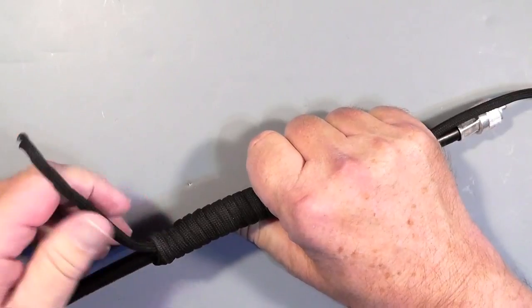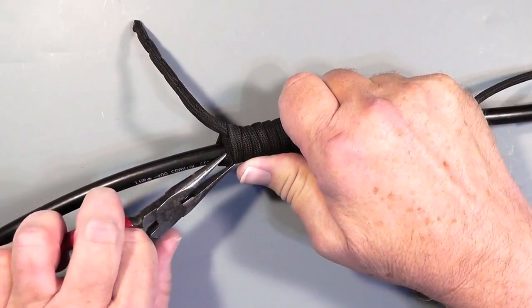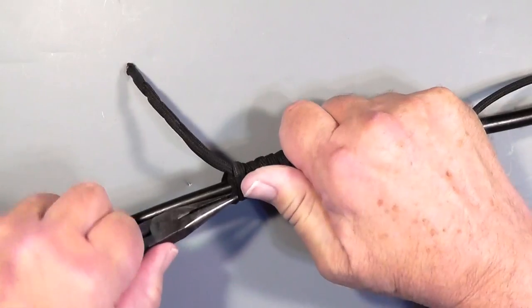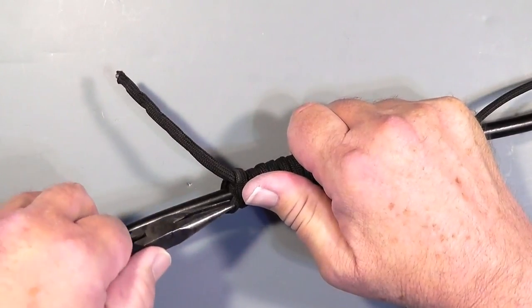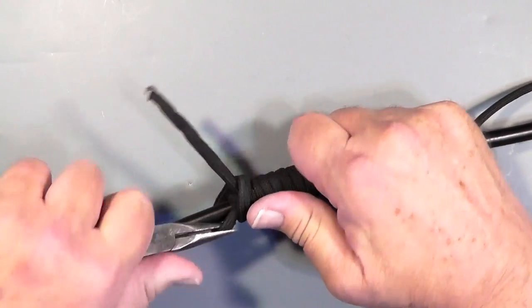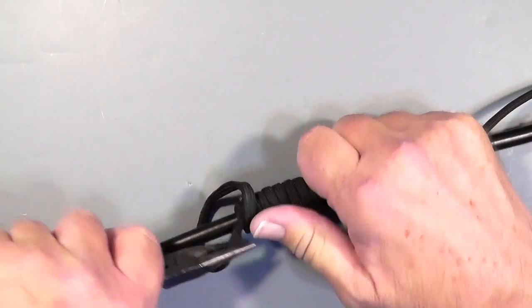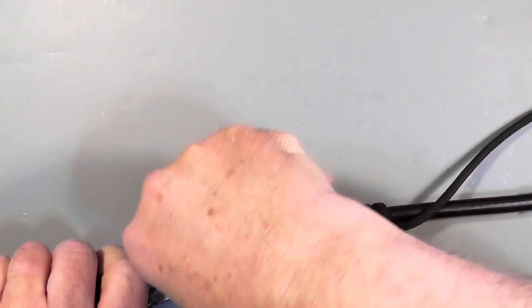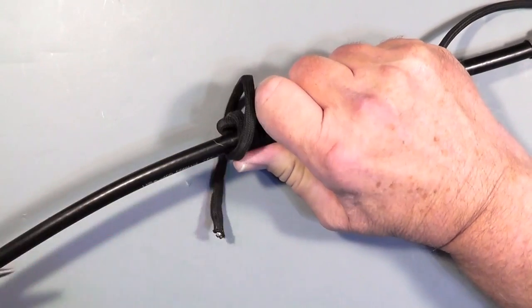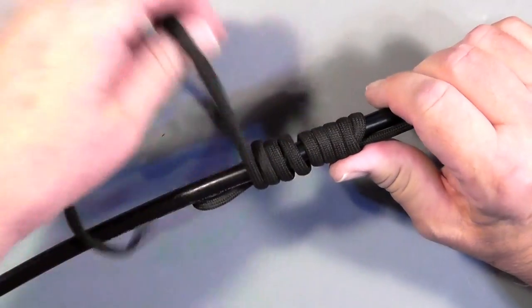Now if you want to take the thing apart, you've got to get this out of here. So I use needle nose pliers to pull that last little piece out. It's in there pretty tight. Once I pull this out, the knot will just fall apart. Now this just comes apart. You can take it off and do whatever you want.